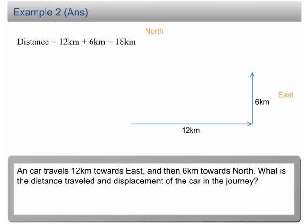How about displacement? Displacement is the shortest length between A and B. Let us draw a straight line from A to B. The length of this line is the displacement. We can see that these three lines form a right angle triangle.